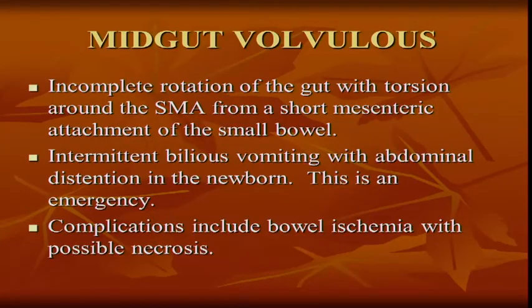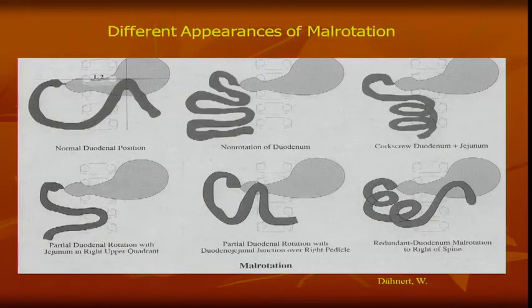These patients will have bilious vomiting. It's incomplete rotation of the gut with torsion around the SMA from a short mesenteric attachment. Bowel ischemia and possible necrosis are the complications. This is what a normal duodenal C-loop looks like — the bulb is here, and the ligament of Treitz should be at the same level as the bulb, to the left of the left pedicles.